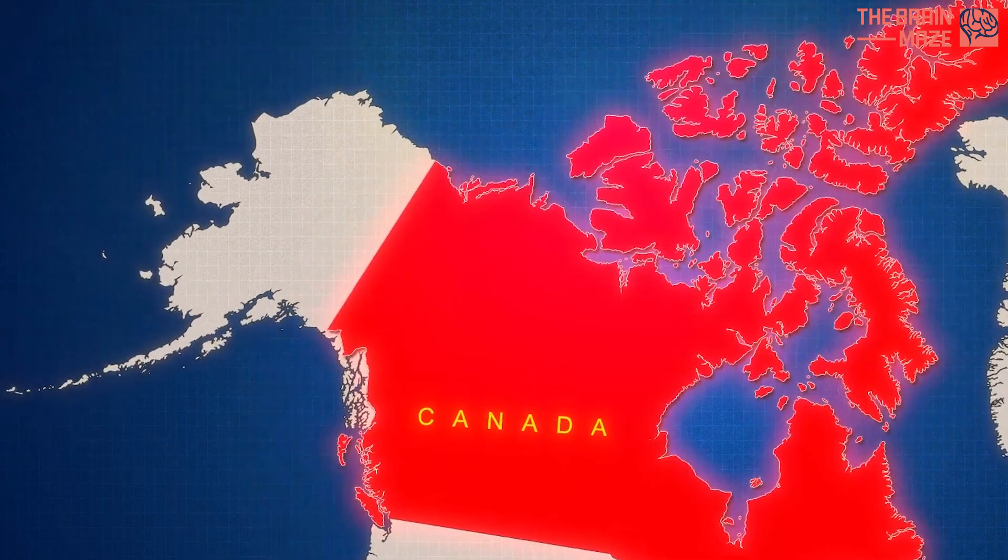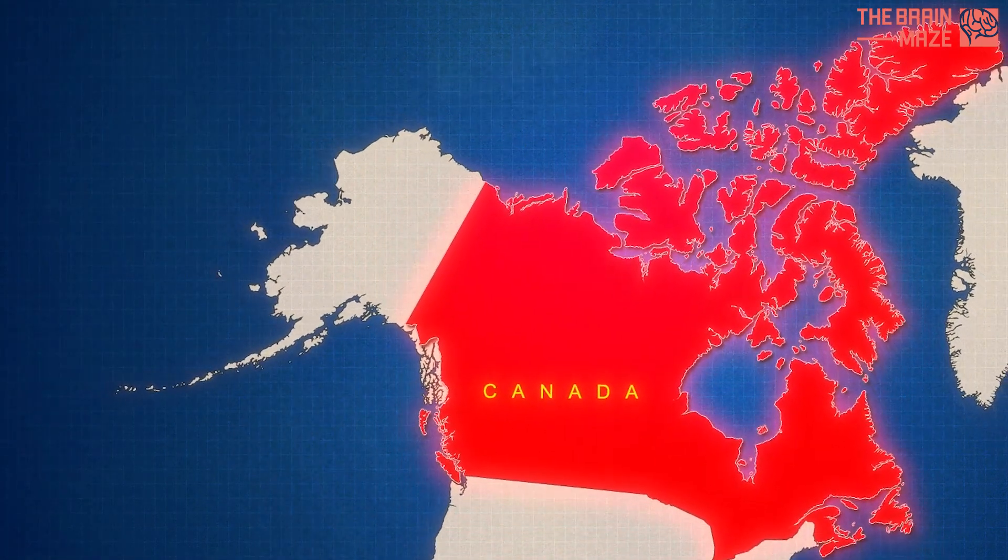Seismic readings from earthquake pairs, twin tremors striking the same location years apart, should be identical. But they are not. Signals captured in Alaska and Canada tell us something deep within the planet has changed.